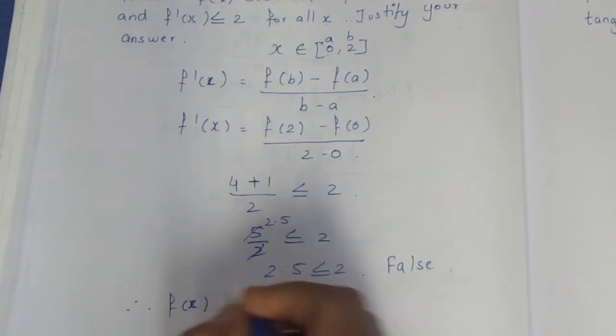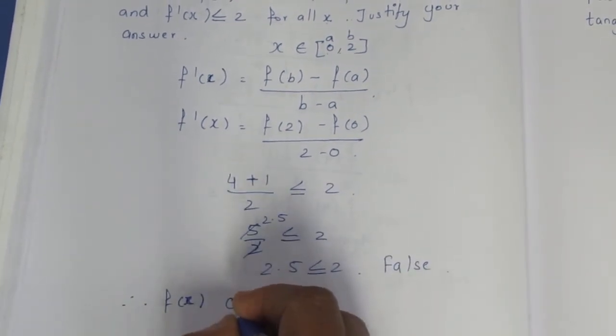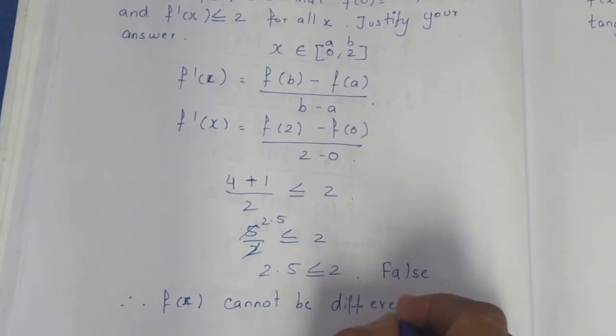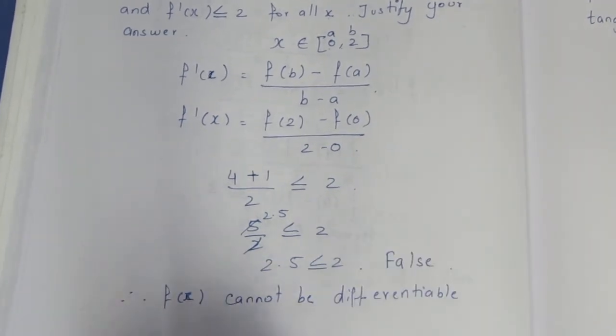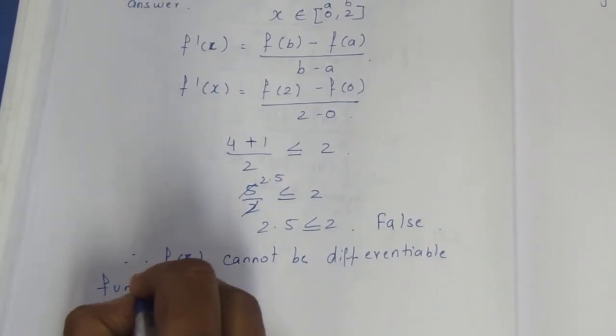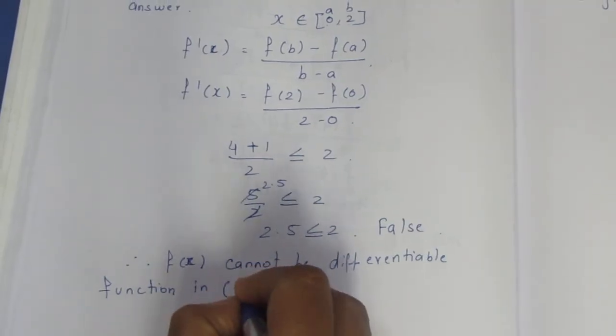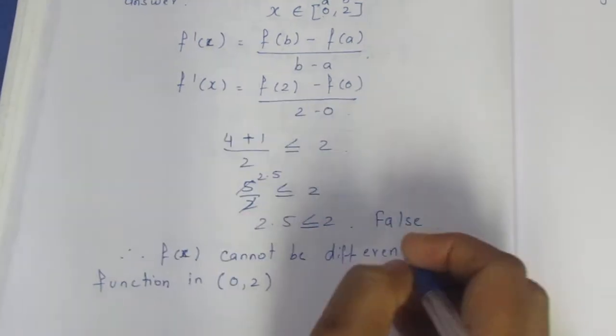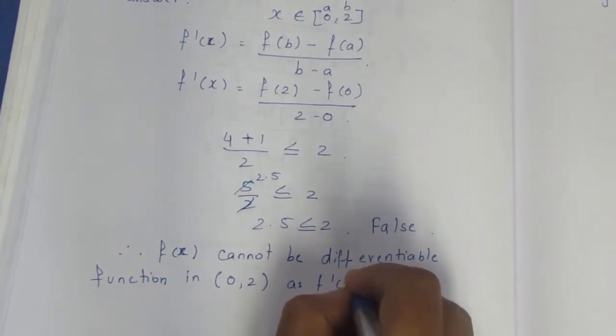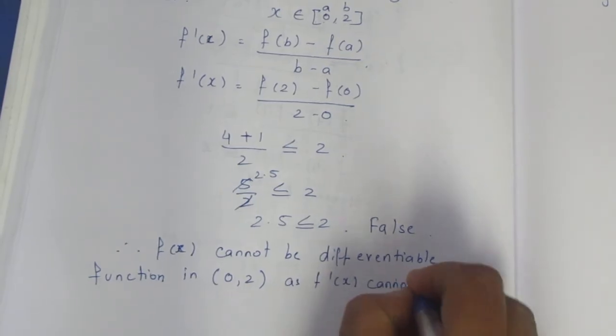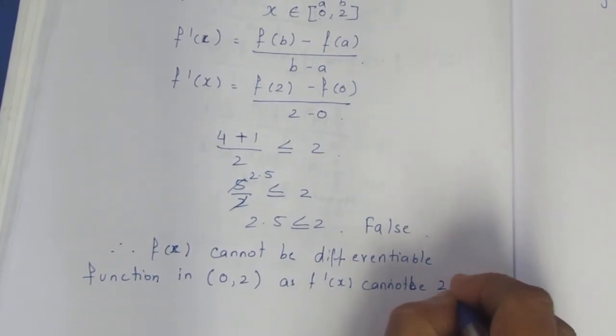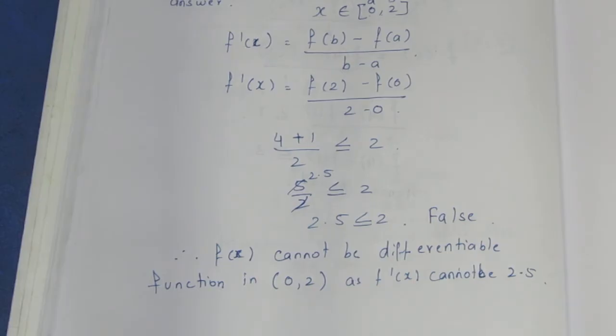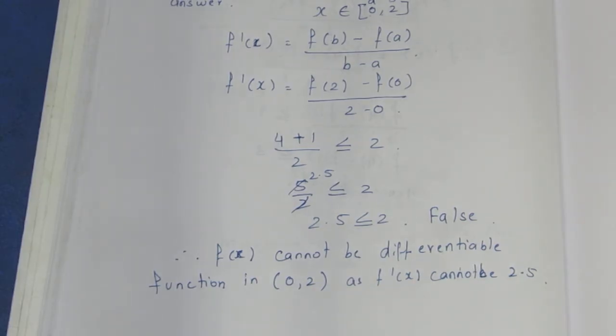f(x) cannot be a differentiable function in the open interval (0, 2), as f'(x) cannot be 2.5. f(x) cannot be a differentiable function in (0, 2) as f'(x) cannot be 2.5.